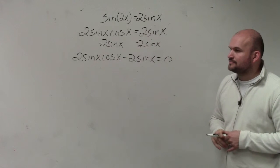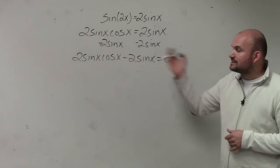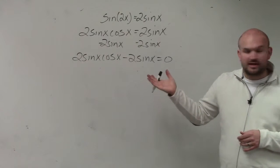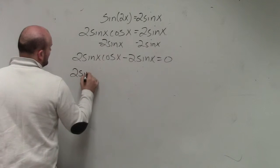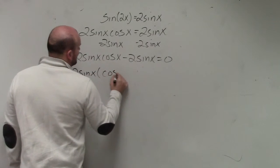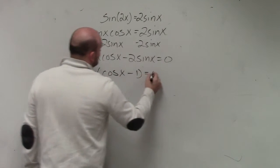Now the next thing that I can do, you guys can see, is they both share a sin(x), or 2sin(x). So I can factor out a 2sin(x). By doing that, I get cos(x) - 1 = 0.